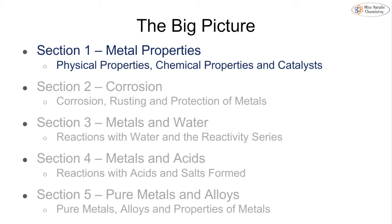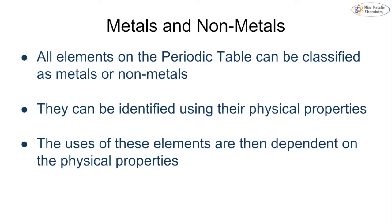This is section one of topic 8G looking at metal properties, and there will be four more sections on this topic. Every single element on the periodic table can be classed as a metal or non-metal. You've already met the periodic table earlier this year, and we can identify whether an element is a metal or non-metal by looking at its physical properties. What we use elements for — specifically metals — will depend on what properties they have.